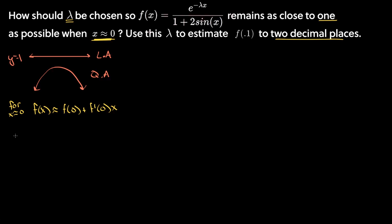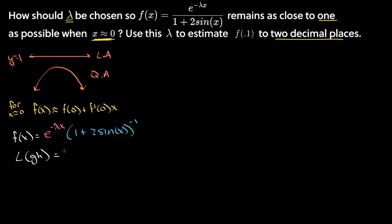We can rewrite f(x) as a product of two functions: f(x) = e^(−λx) · (1 + 2sin(x))^(−1). For a linear approximation, we can either find the linear approximation of the whole product, or take the individual linear approximations of each function, multiply them together, and toss out higher-order terms.